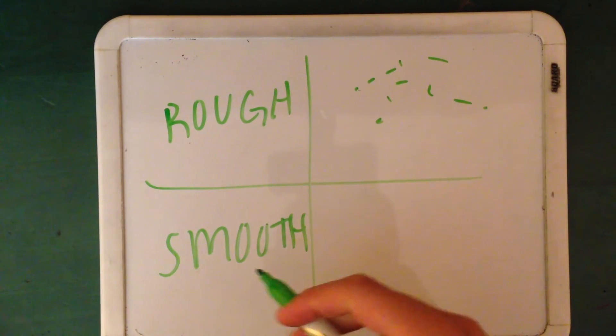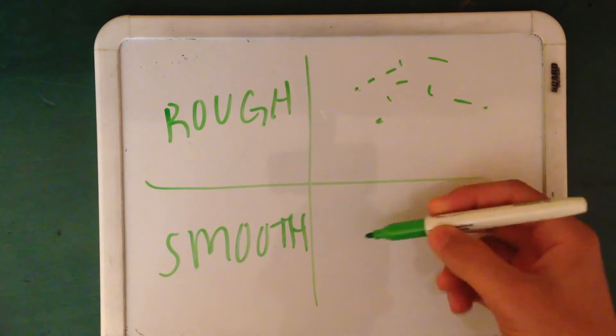And the smooth ER, that's where the site of lipid synthesis, and lipid is just a fat.